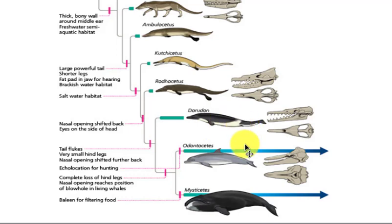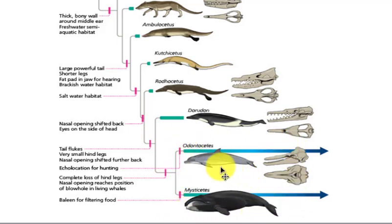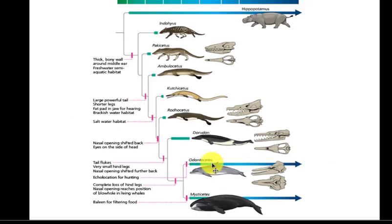As we get to modern day whales — Odontocetes, the toothed whales, and Mysticetes, the baleen whales — we see no physical evidence of any limbs or legs.